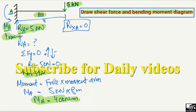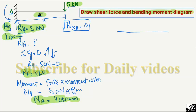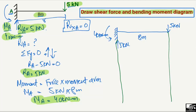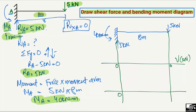Now we can draw the shear force and bending moment diagram. The beam is 8 meters in length with a 5 kN load at the free end, a moment of 40 kN·m, and a reaction of 5 kN at the fixed end. We draw reference lines for the beam — these represent zero shear force and zero bending moment baselines, with units of kilonewtons and kilonewton·meters respectively.